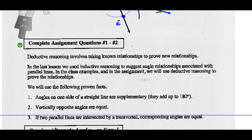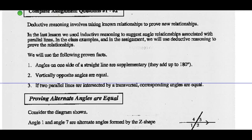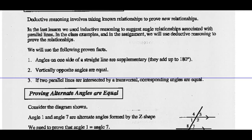Let's now look at some more reasoning skills. In the last unit, we talked about inductive and deductive reasoning. Inductive reasoning uses a bunch of examples to make conjectures. Deductive reasoning involves taking known relationships to prove new relationships. In the last lesson we used inductive reasoning; in the class examples and the assignment, we will use deductive reasoning to prove new relationships.